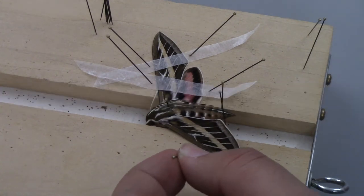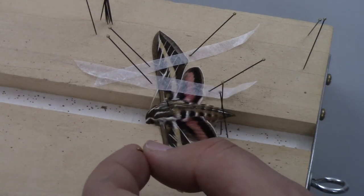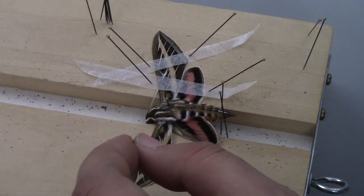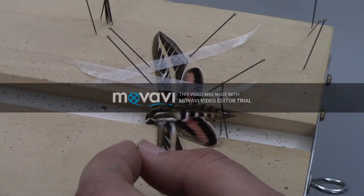Carefully use your pins to slowly move the wings into a perpendicular position. You may not get it the first time, but keep trying.